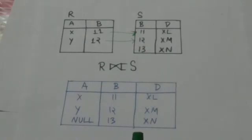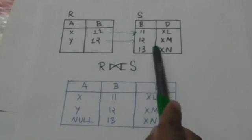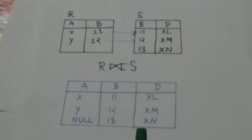Now see this tuple of relation S, it doesn't have any matching tuple in relation R. It is also present in the resulting relation, and attributes of relation R are padded with null values in the resulting relation.